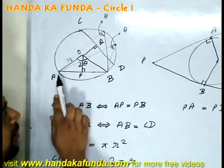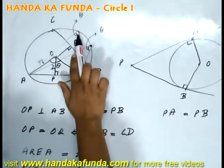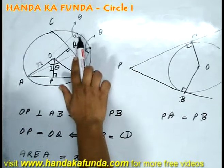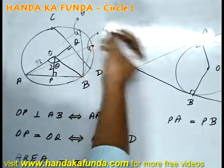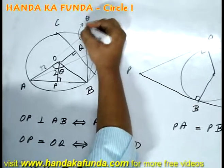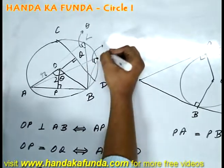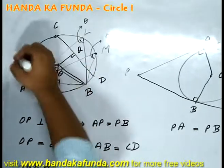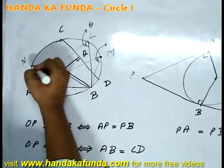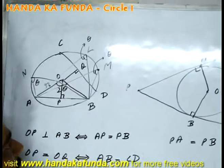Another point to note is that the chord AB if it sustains theta at any point on the circumference, it will sustain the same angle at all other points. As you can see, say this is L. At L, it sustains theta. At M, it sustains theta. I take any other point, let's say N, it will also sustain theta at any point on the circumference.